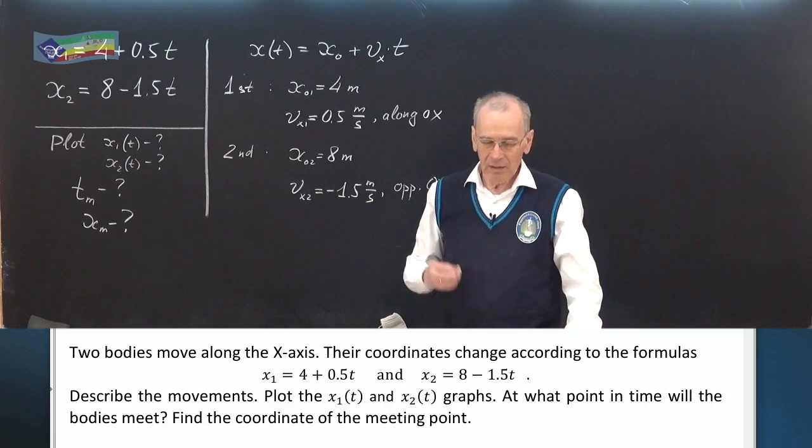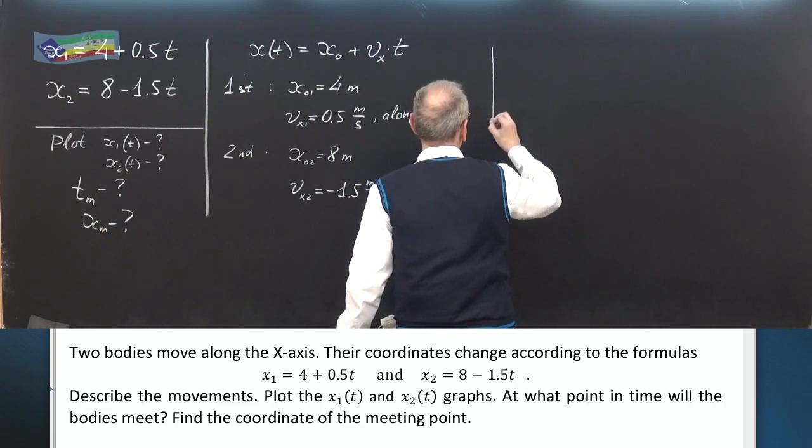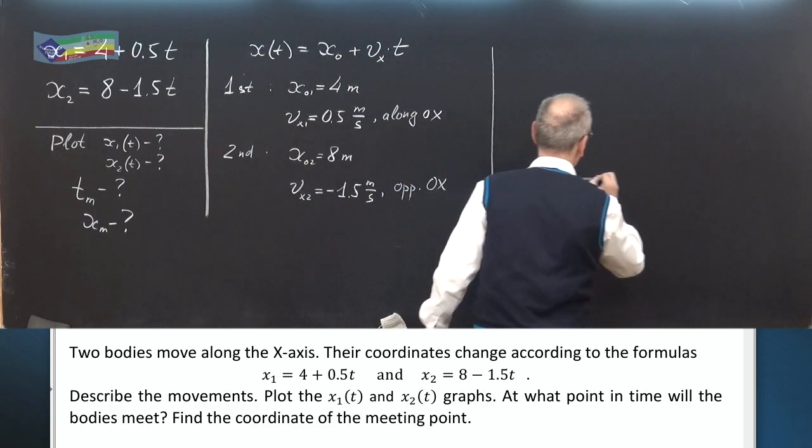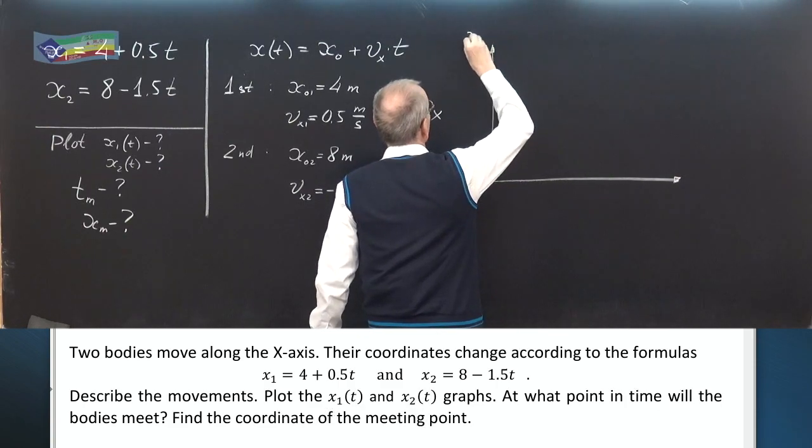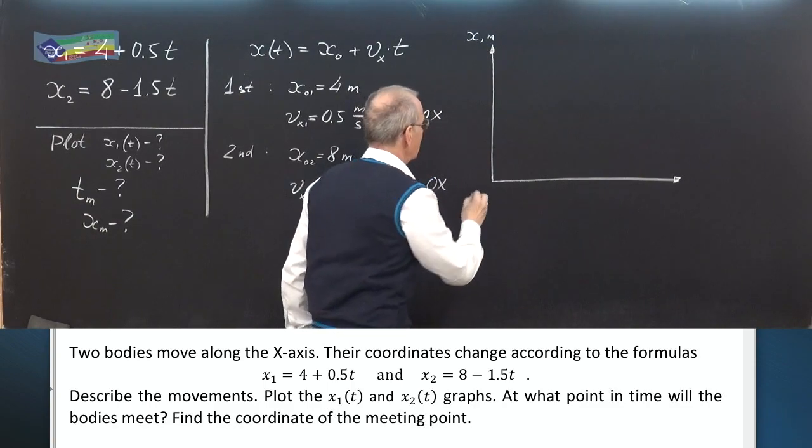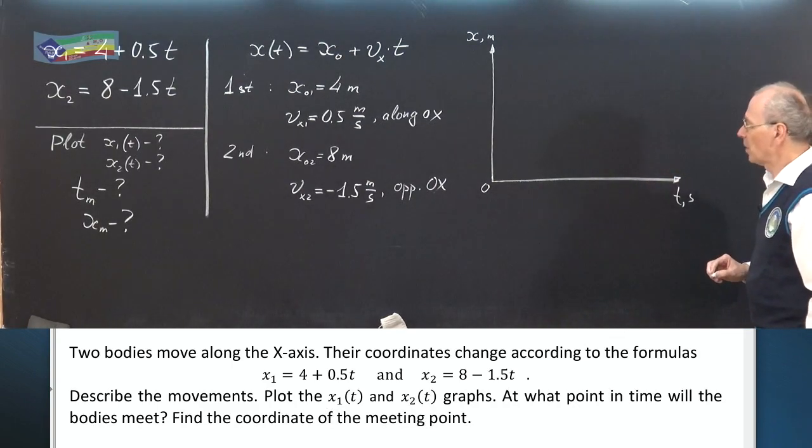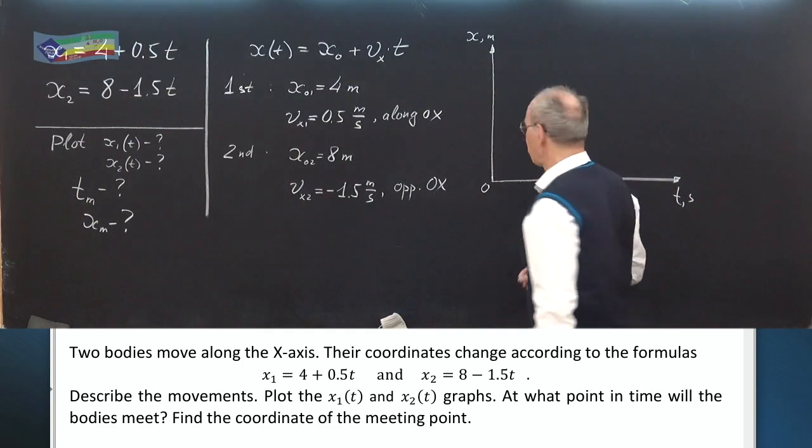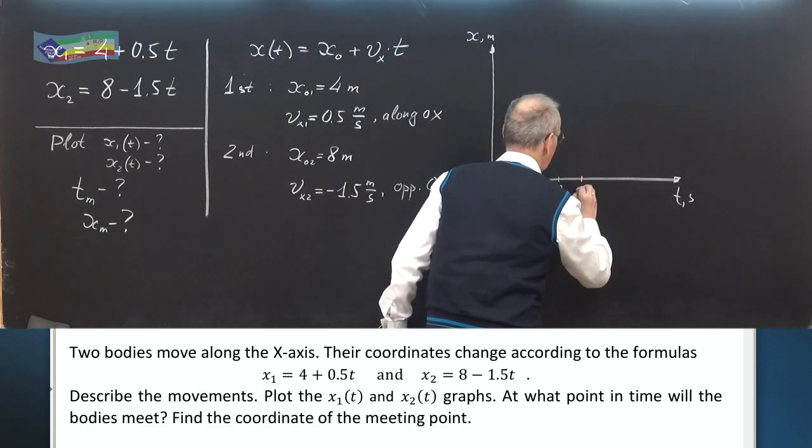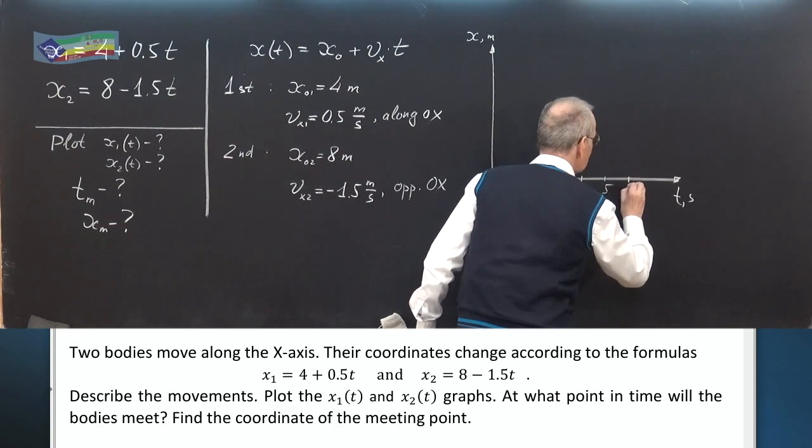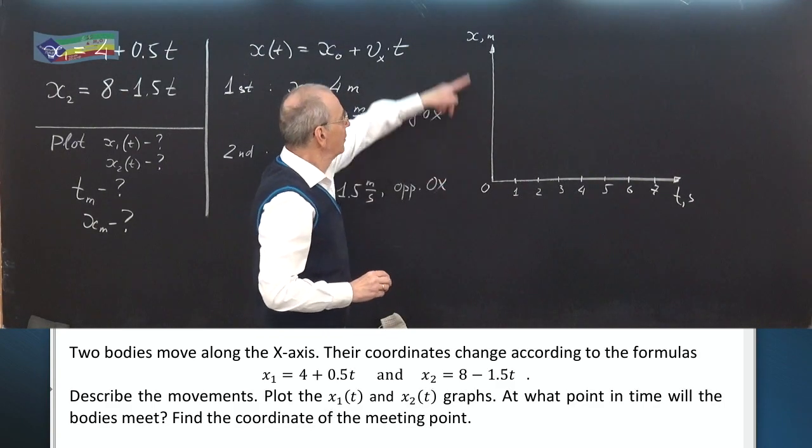Vertical axis is for coordinate. Horizontal axis is for time. t in seconds stands for 1, 2, 3, 4, 5, 6, 7.